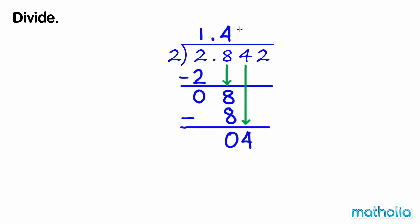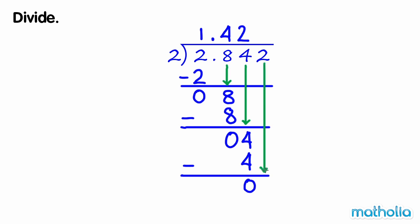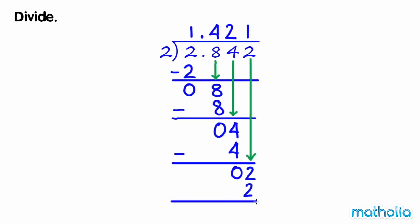4 hundredths divide 2 equals 2 hundredths. 4 hundredths subtract 4 hundredths equals 0. Bring down the thousandths. 2 thousandths divide 2 equals 1 thousandths. 2 thousandths subtract 2 thousandths equals 0. So 2.842 divide 2 equals 1.421.